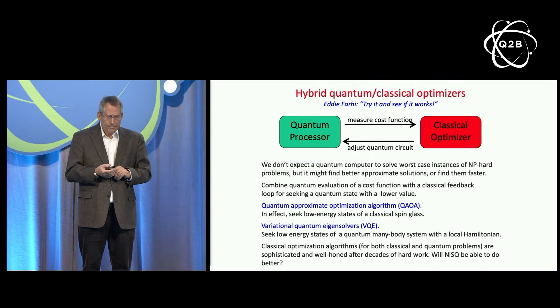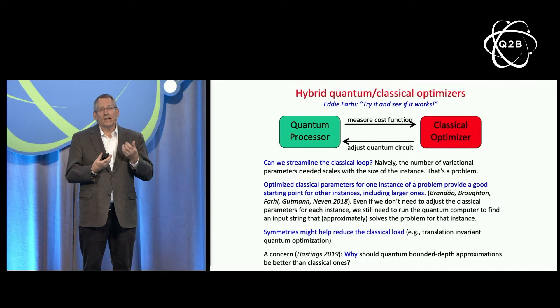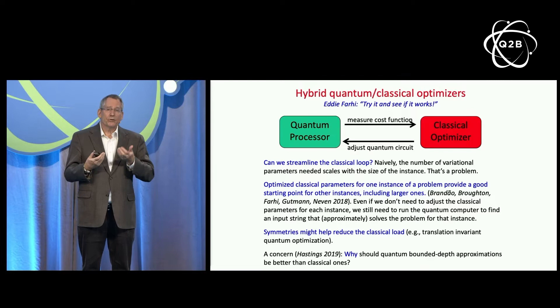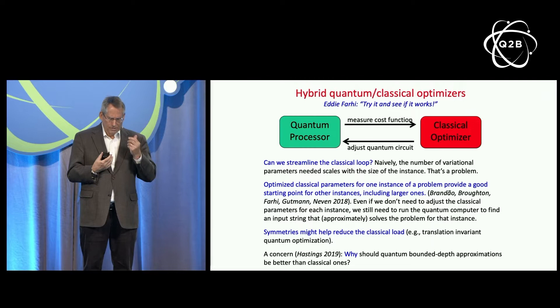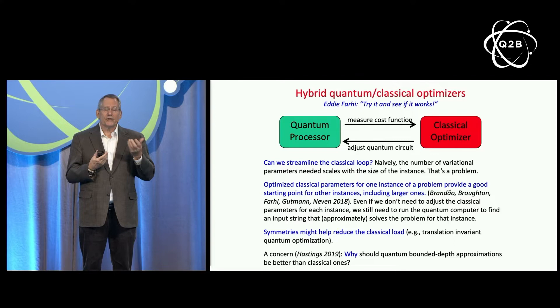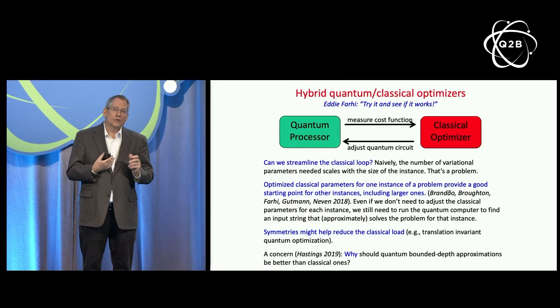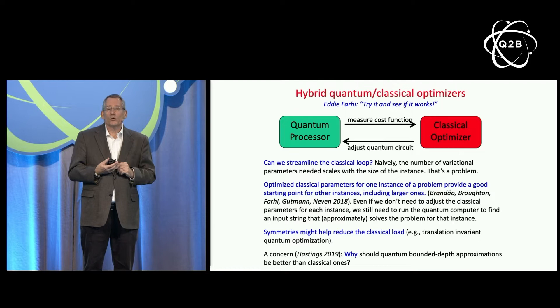One concern is that the classical optimization side of this loop can be computationally demanding, especially if we need many variational parameters as the problem size grows. There is a ray of hope from some authors suggesting that if we solve the hard problem of optimizing classical parameters for a particular instance, those same parameters will provide a good starting point for solving other instances, which would reduce the classical computational load for QAOA. But the truth is we don't have very good theoretical arguments for why low-depth quantum circuits will have an advantage compared to classical methods.